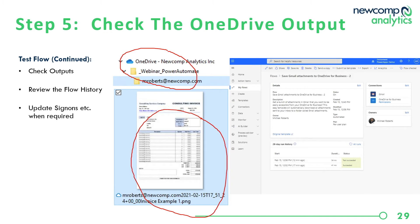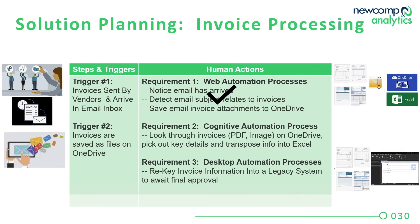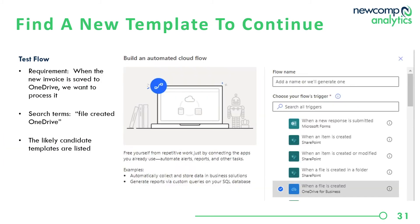Let's recap our first requirement: we now have a solution that notices an email arriving and saves it to OneDrive. Next we want to think about what we can do to process something as complex as an invoice. There are many different fields and countless different formats, and it can be difficult to transpose those into Excel. As before, we're going to start by seeing if there's a template that can help — we'll search for 'when a file is created' and one of the triggers is for a file being created in OneDrive.